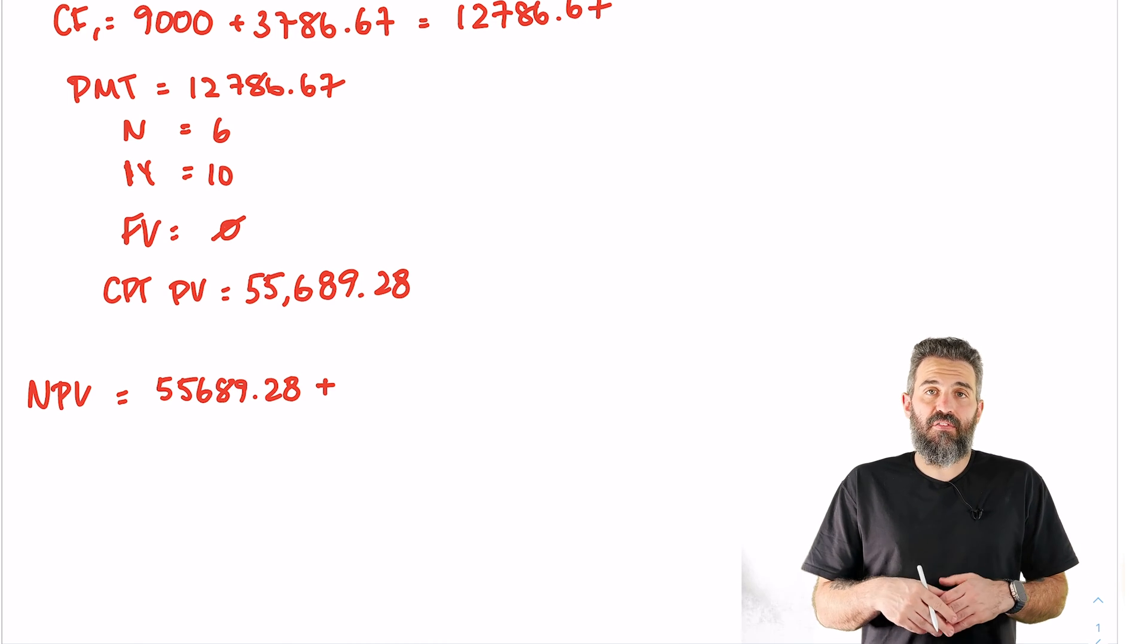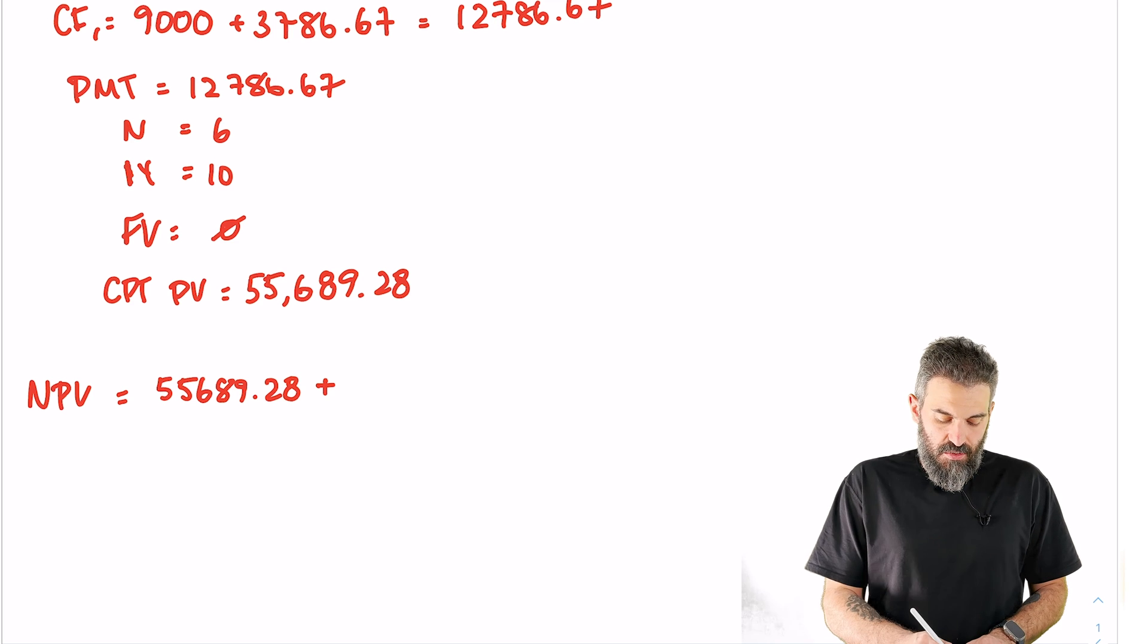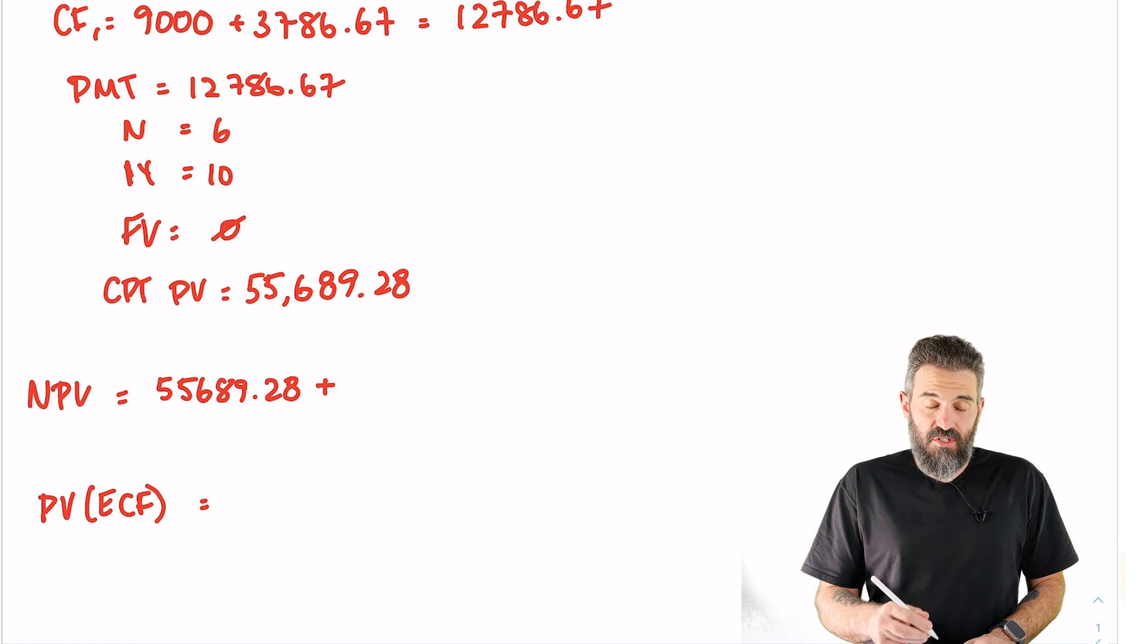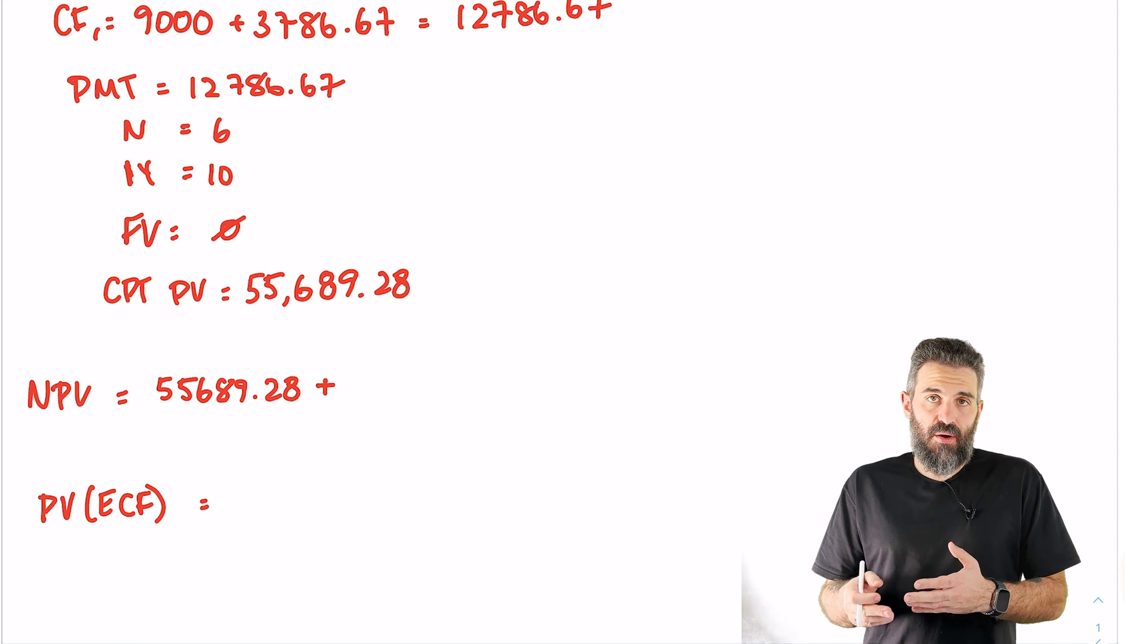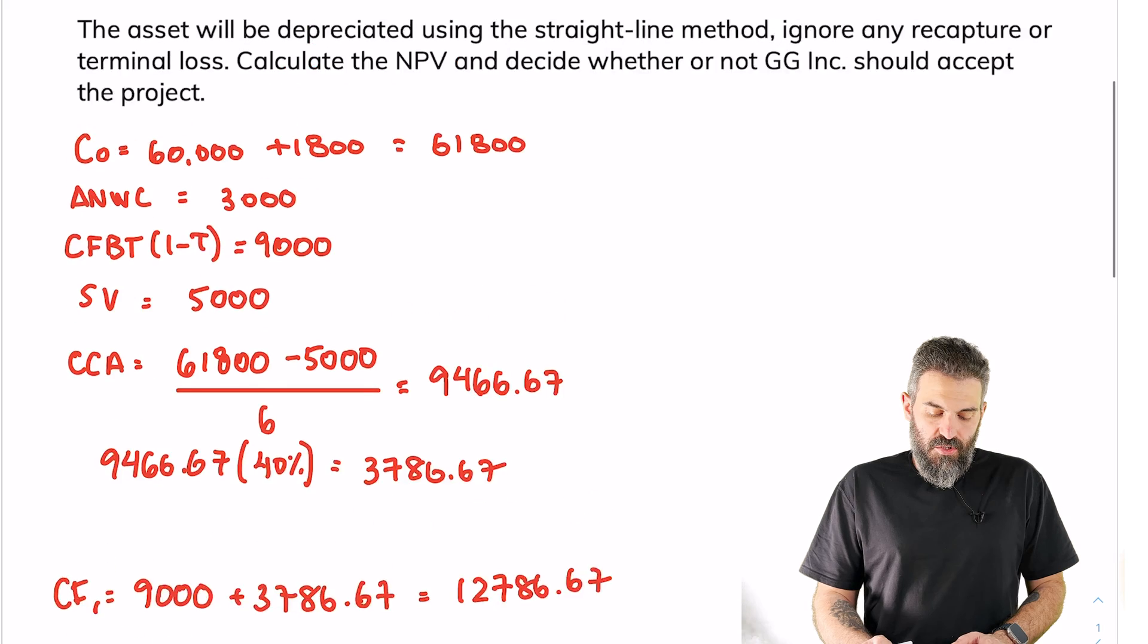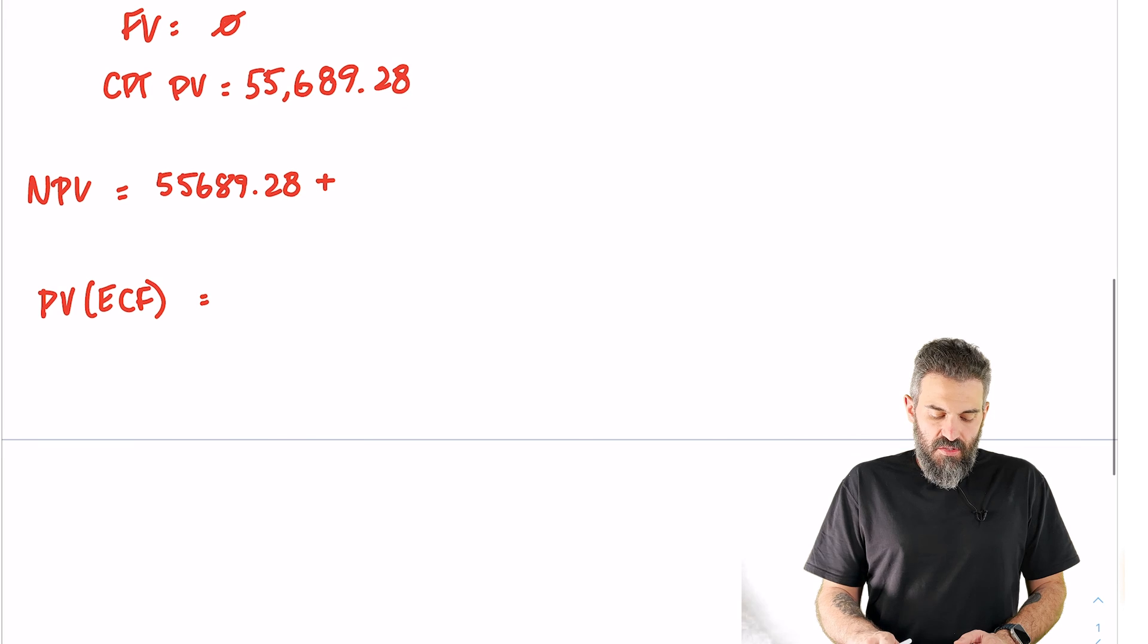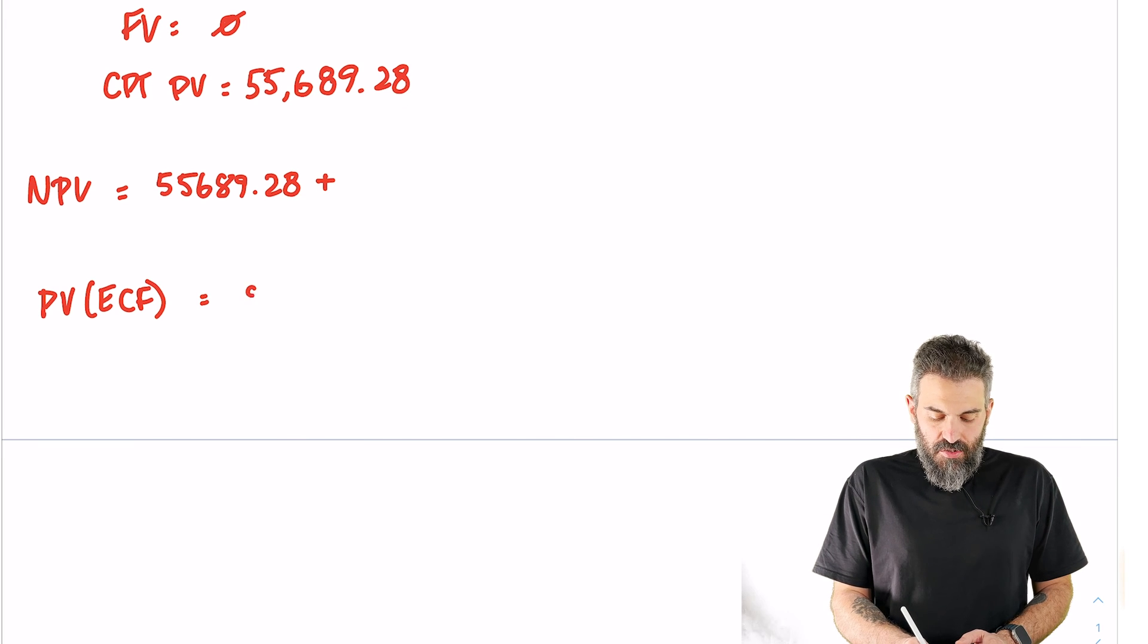Plus the present value of our ending cash flow. Actually, we didn't do that. The present value of our ending cash flow - first we're going to have to find the ending cash flow, which is the salvage value plus any recovery of networking capital. If we look back at the question, salvage value was $5,000 and the working capital was $3,000, so our ending cash flow is $8,000.